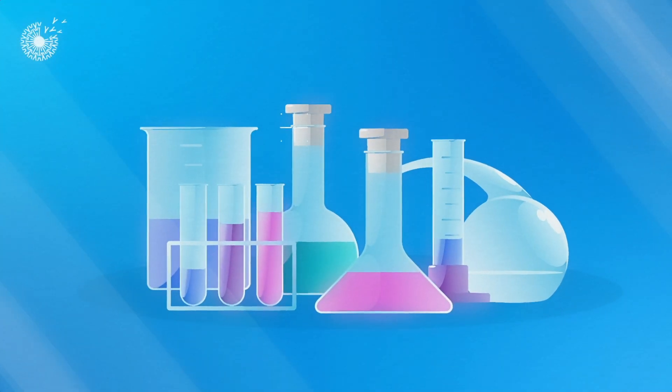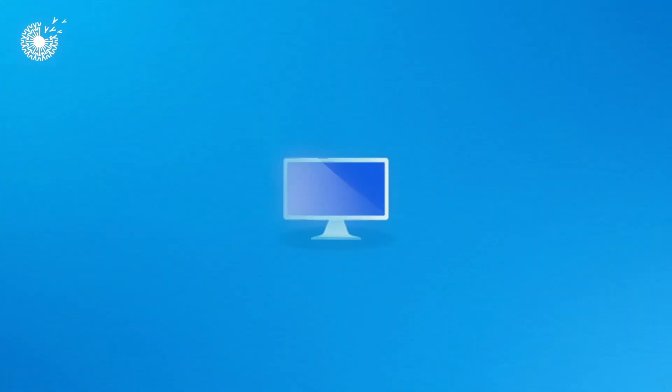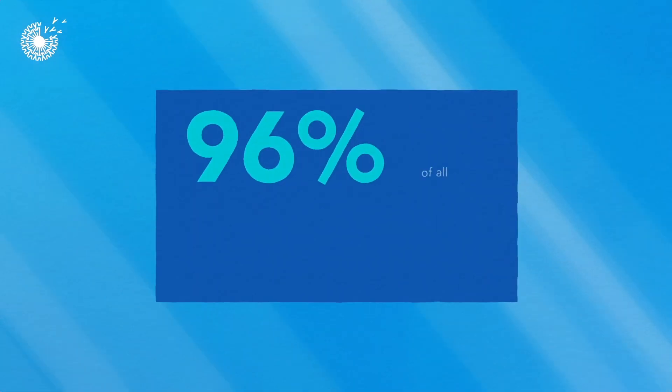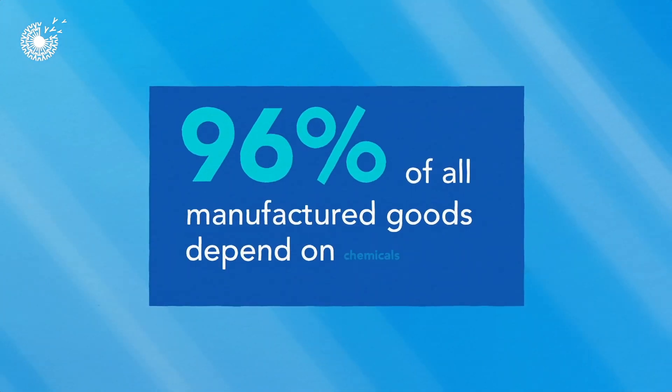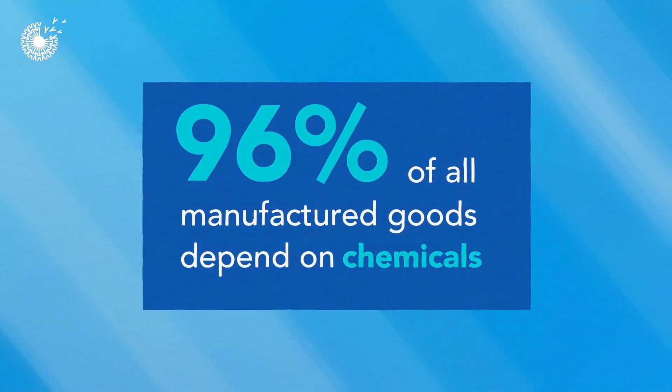Chemicals are in just about everything we use in our daily lives from computers to clothing to medicine. 96% of all manufactured goods depend on chemicals in one way or another.